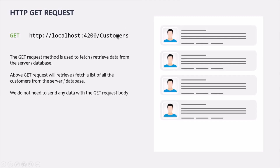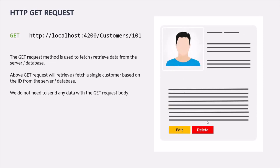We use the GET HTTP verb to fetch or retrieve data from the server or the database. For example, if we make a GET request to the URL root slash customers, we are telling the server that we want to get all the customers in the response. Since we are requesting data with a GET request, we do not need to send data with a request body. If we want to send some data, we use query strings or route parameters. For example, to get a single customer by ID, we specify the customer ID in the URL using route parameters or query strings.